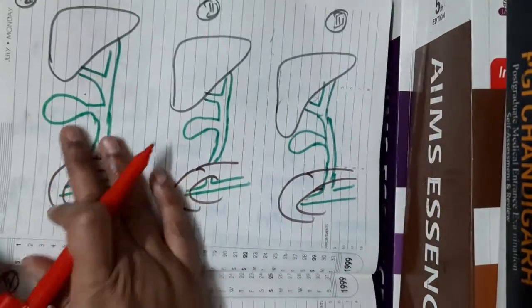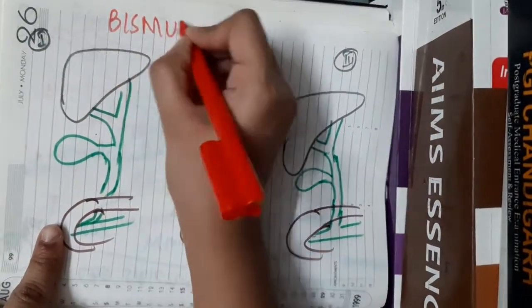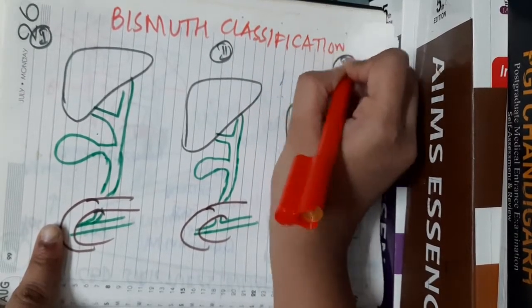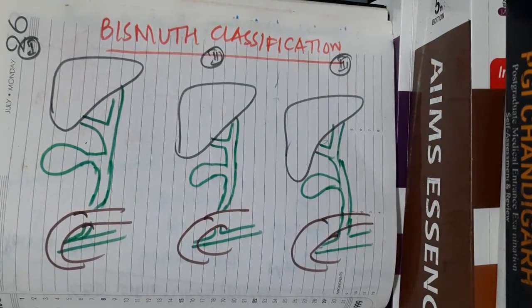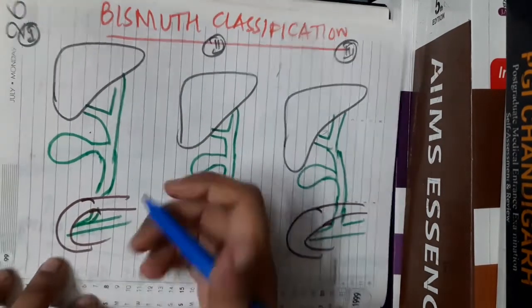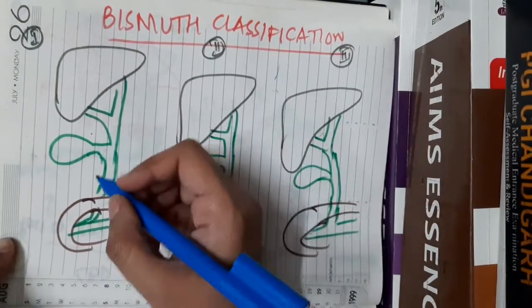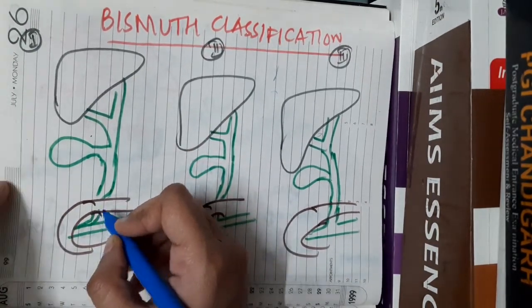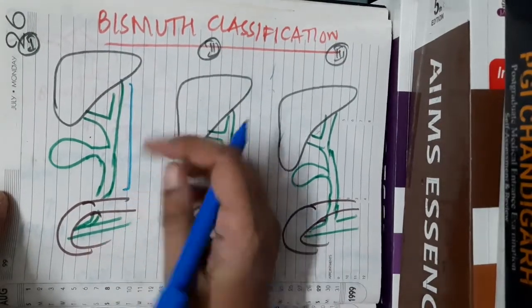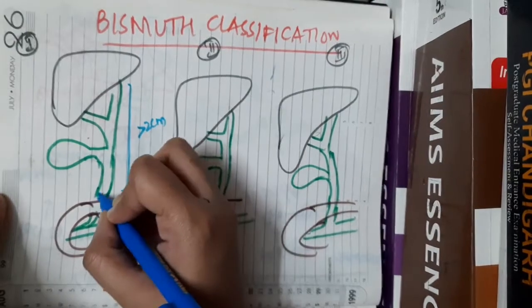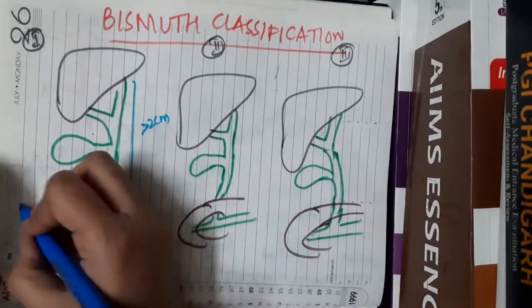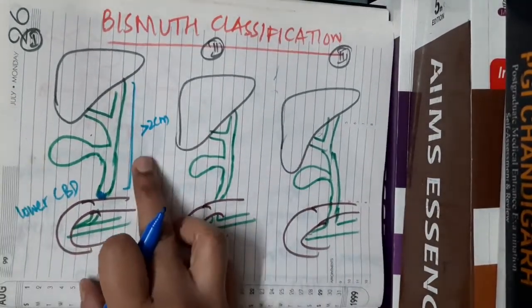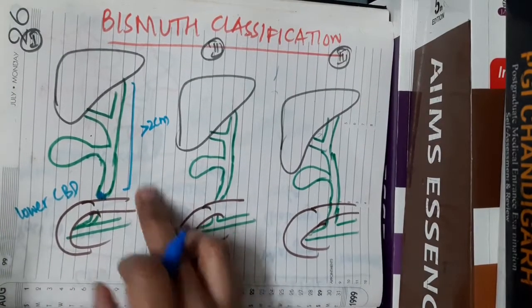First, the classification. This classification is called the Bismuth classification of biliary stricture. In Bismuth classification type 1 or grade 1, the stricture is mainly in the lower part of common bile duct, and the proximal part of the bile duct will be more than 2 cm. The stricture is present in the lower common bile duct and the proximal stump should have a length more than 2 cm.